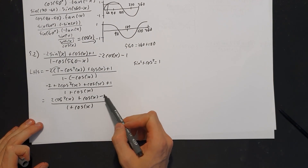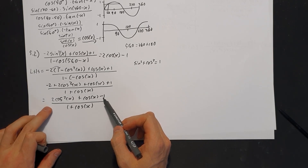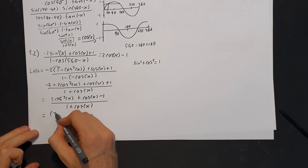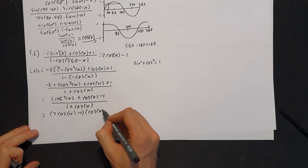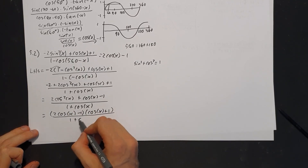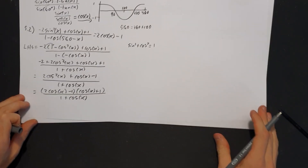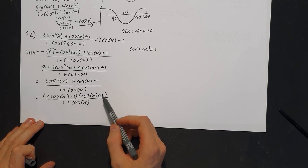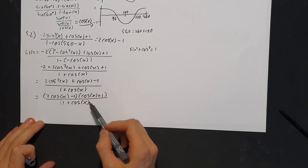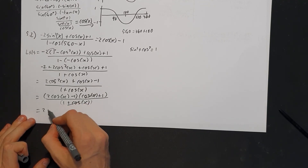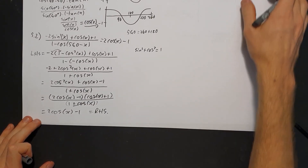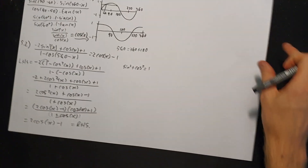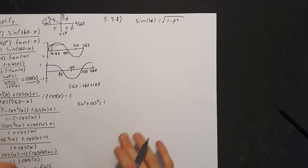Factorizing the numerator 2 cos squared x plus cos x minus 1: with a leading coefficient of 2 and constant term of negative 1, our factors give (2 cos x minus 1)(cos x plus 1), all over (1 plus cos x). Since (cos x plus 1) and (1 plus cos x) are the same, they cancel, leaving 2 cos x minus 1, which equals the right-hand side.